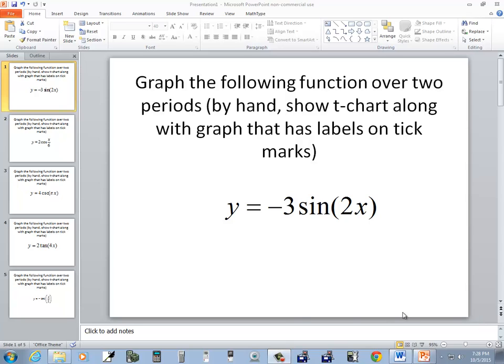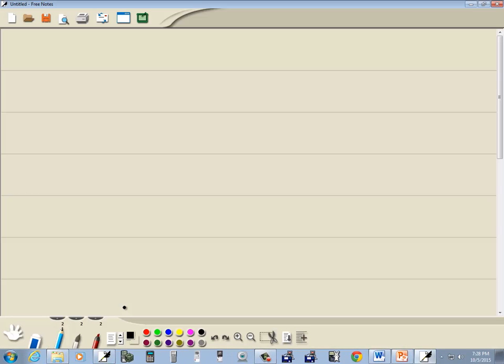Let's take a look at this problem. We want to graph the following function over two periods. We want to do it by hand, showing the t-chart along with a graph that has labels on the tick marks. So we've got y equals negative 3 sine 2x.